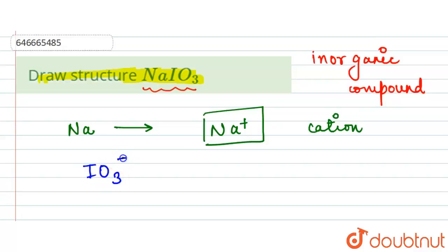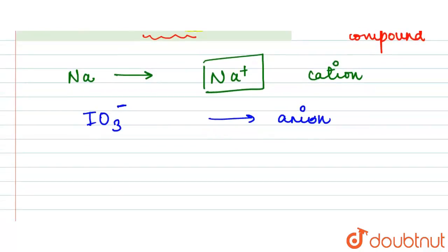And if we talk about the IO3, it will be IO3 minus, then that will be our anion. It will exist like this - here we will have Na plus and we will have IO3 minus. So here Na plus will be written like this only.